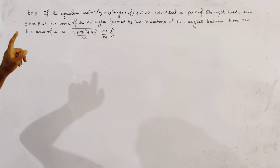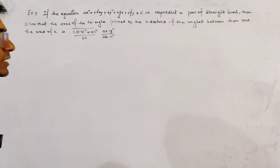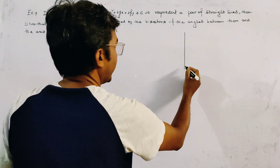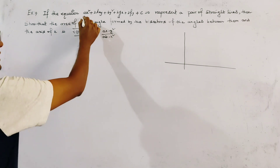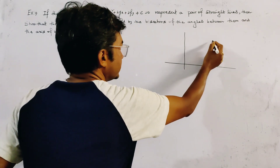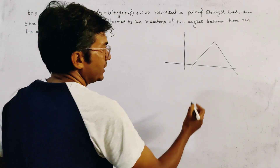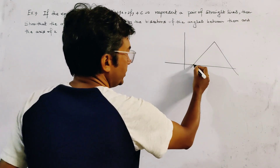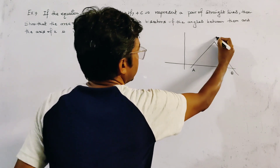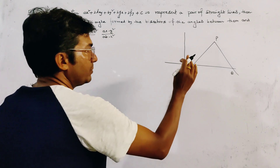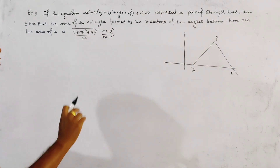We have to show the area of the triangle formed by the bisectors of these lines and the x-axis. The rough sketch of this problem: if we draw the bisectors of the lines, we know they are perpendicular to each other. The points of intersection with the x-axis are A and B, and the intersection point of the bisectors is P.